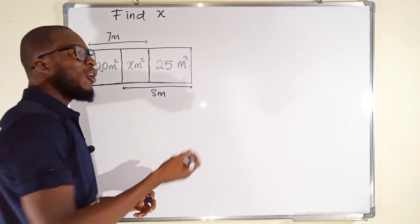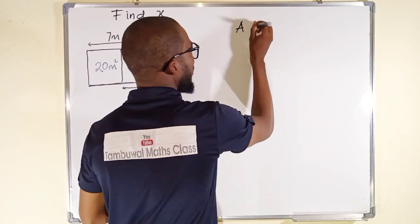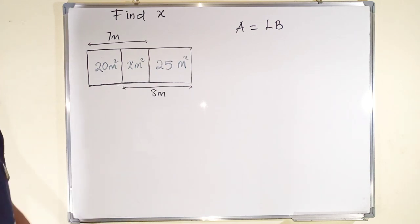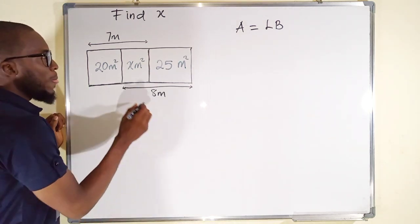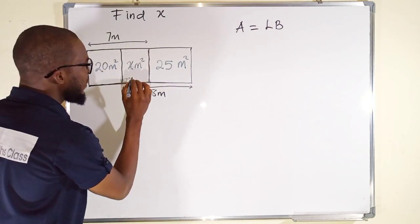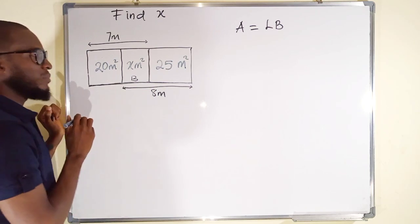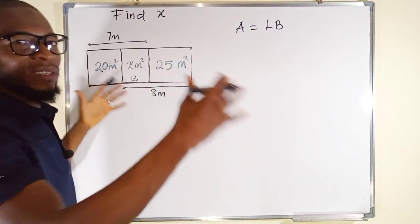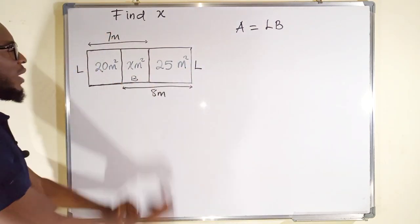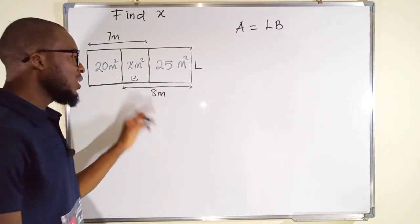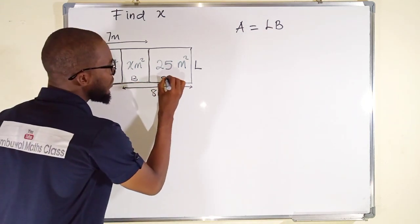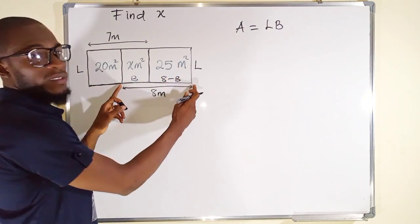We know that area of a rectangle is equal to length multiplied by the breadth. So since this one is unknown, let us define the breadth of this rectangle with B. You know the opposite lengths of a rectangle are equal. So let me name this one as L. This one is also L. So if the breadth of this missing rectangle is B, definitely this will be 8 minus B because the total from here to here is 8.